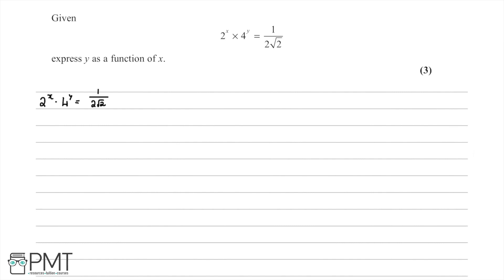Taking a look at what we have, we first think about indices and index laws. We know the following index law: if we have a to the power of m multiplied by a to the power of n, that is going to equal a to the power of m plus n.